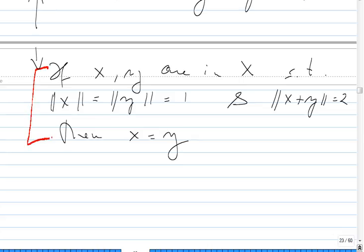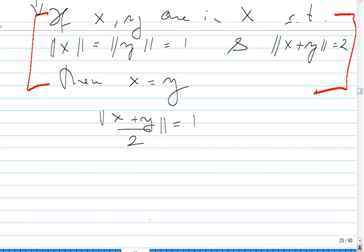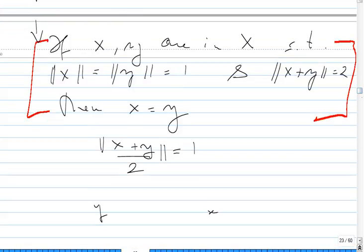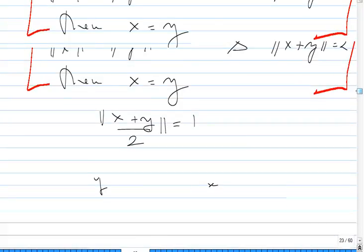So this is the condition I'm going to be focusing on. The condition norm of X plus Y equals 2 means that the norm of X plus Y over 2 is equal to 1. That proof will show that if you have X and Y satisfying this condition, it means if you take the midpoint and the midpoint is on the surface of norm 1, then in fact the whole segment has norm 1.